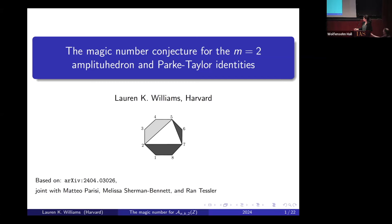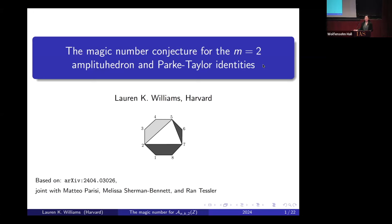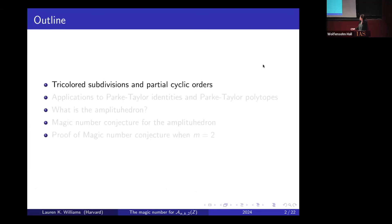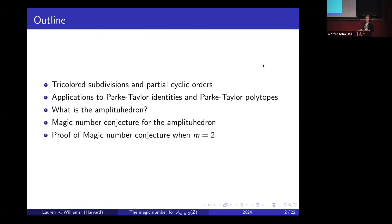This is joint work with Matteo Parisi, who's here, Melissa Sherman-Bennett, who is not, and Ron Tesler. Let me give a brief overview of my talk: I will start by telling you about combinatorial objects called tricolored subdivisions and partial cyclic orders, then explain how these are connected to Parke-Taylor identities and polytopes, and how this combinatorics is related to the amplituhedron — in particular how we can use it to prove the magic number conjecture for m equals 2.